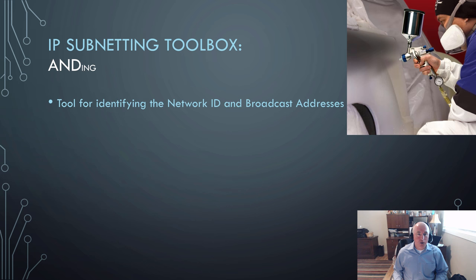The next thing we need to do is ANDing. ANDing is the tool we need to find out our range of usable host addresses, our network ID, and our broadcast address. This tool is used after we've done the user requirements, finger math, and the binary zoom.